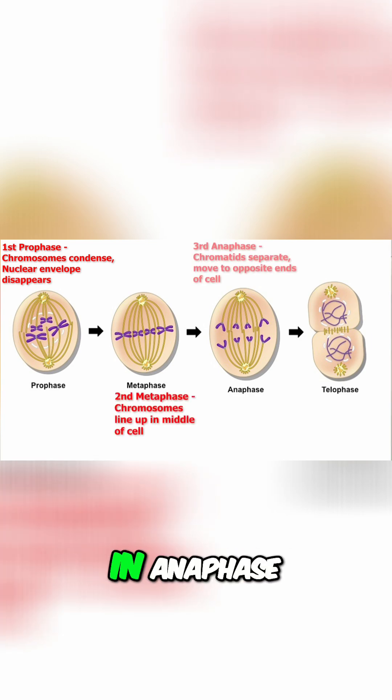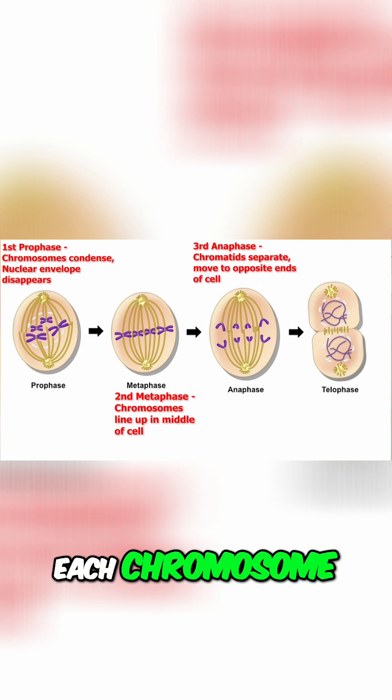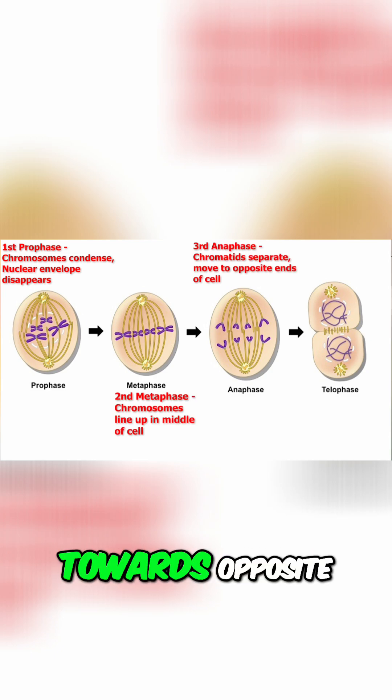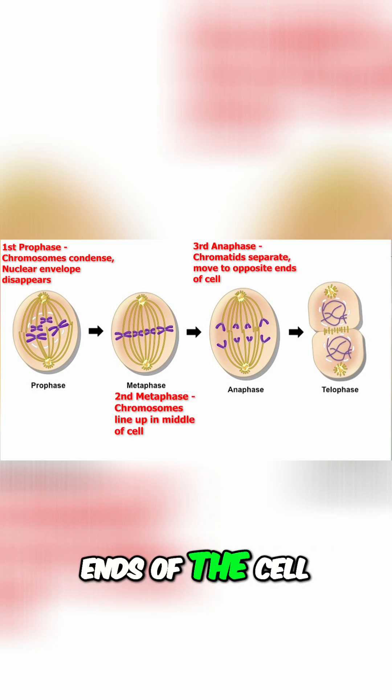Third, in anaphase the chromatids of each chromosome separate and move towards opposite ends of the cell.